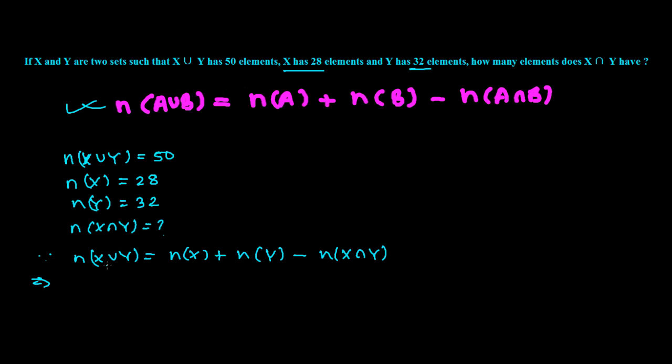So let's put all the values. X union Y we have got here 50. Number of X we have got 28, and here we have got 32 minus n(X intersection Y).